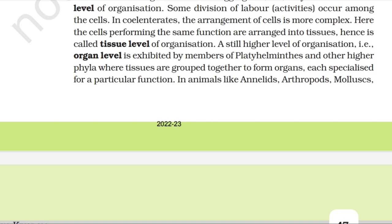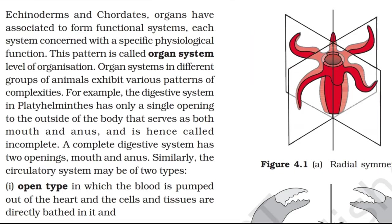In animals like annelids, arthropods, mollusks, echinoderms, and chordates, organs have associated to form functional systems, each system concerned with a specific physiological function. This pattern is called organ system level of organization.